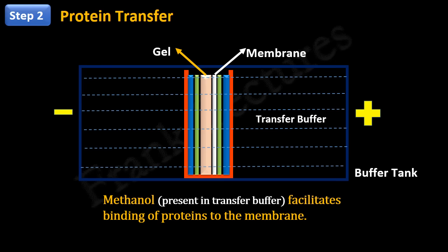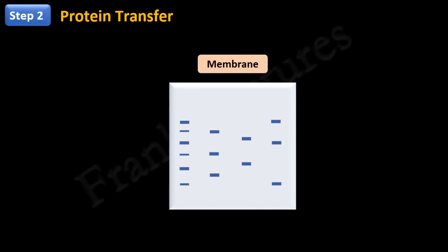At the end of this step, all the proteins from gel move to the membrane and become tightly attached to it. So, we have a membrane with copy of band pattern from gel.